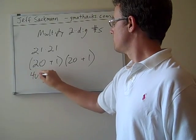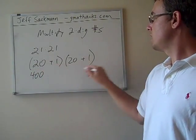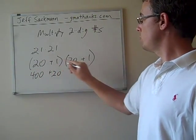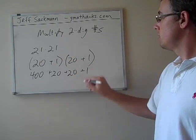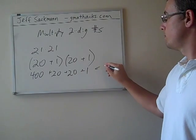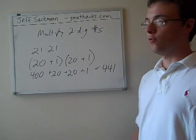20 times 20 is 400. 20 times 1 is 20. 1 times 20 is 20. 1 times 1 is 1. We add it all up, and we get 441.